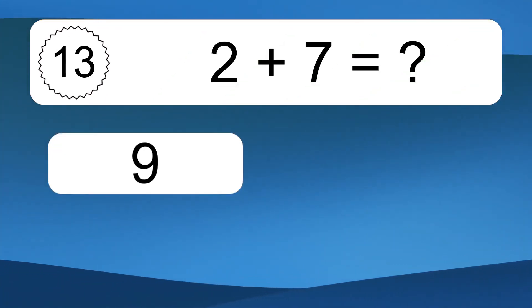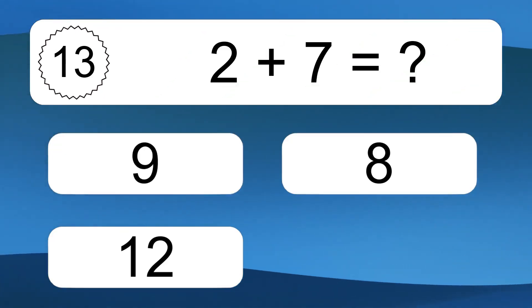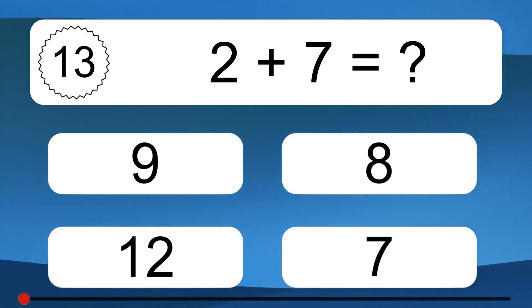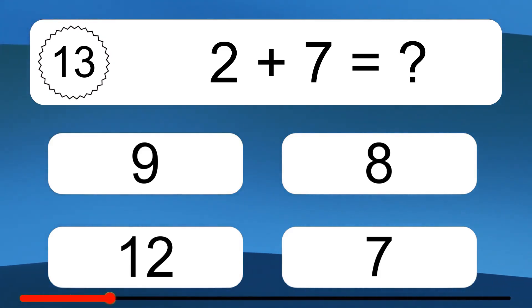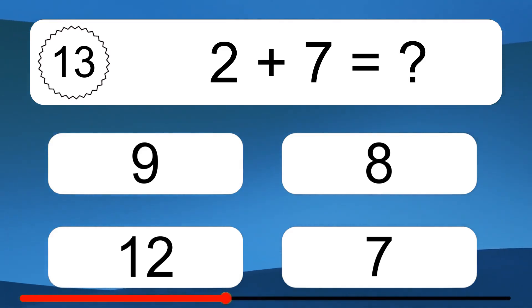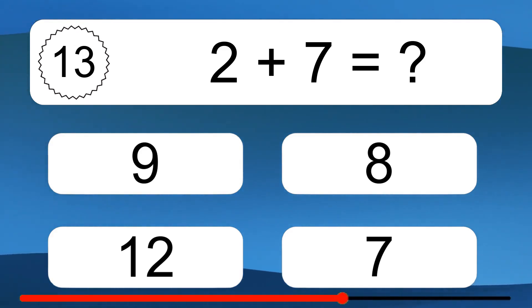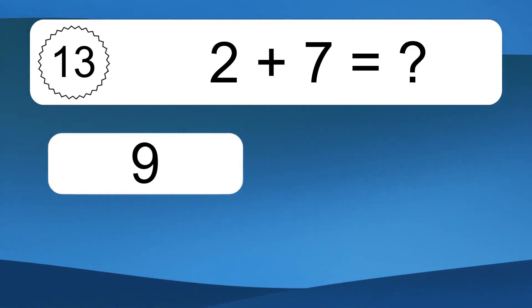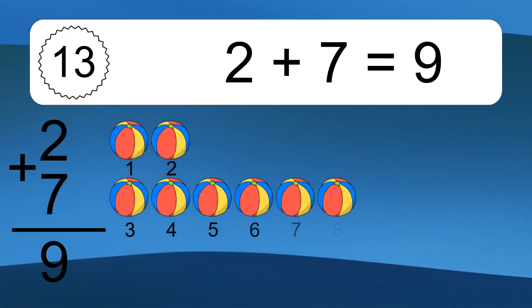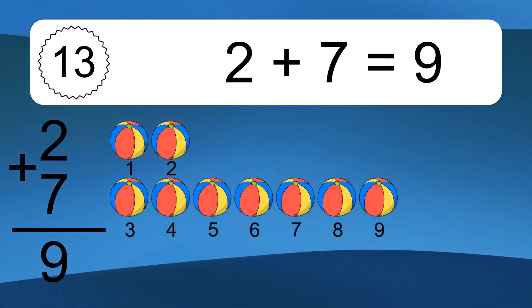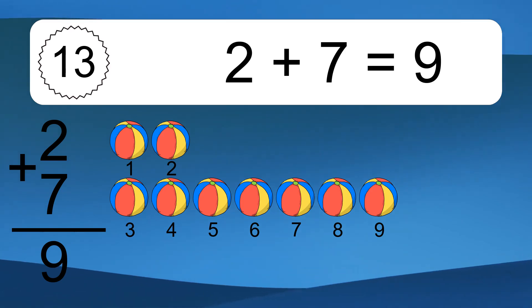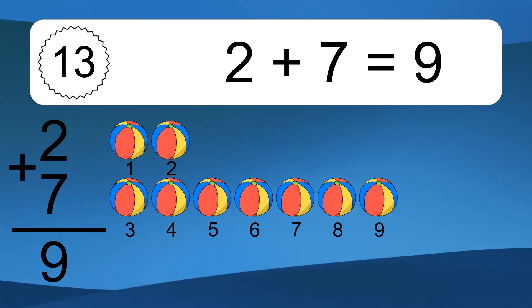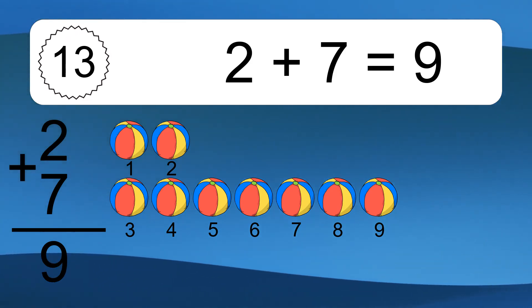Two plus seven equals what? Two plus seven equals nine. Let's count it: one, two, three, four, five, six, seven, eight, nine.